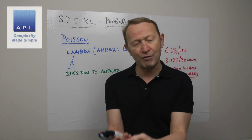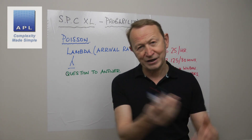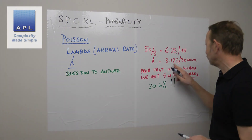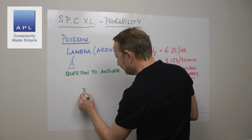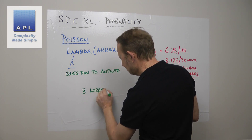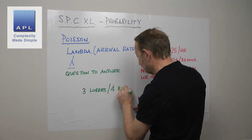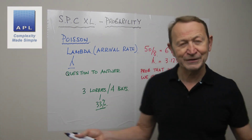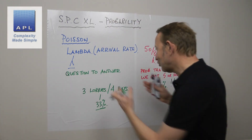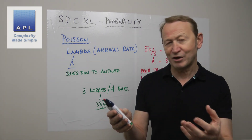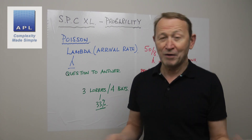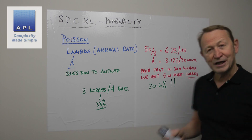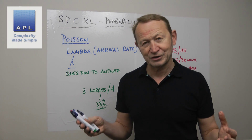This is the difference between observation and the dynamic nature of probability. Probability is not a static observation. By observation, we have on average 3 lorries arriving and four loading bays — that looks like 33% more bays than we need. But that's not the question you need to answer. The question is: how often will my bays get overwhelmed? That's what we're asking — what's the probability of five or more lorries arriving in a 30-minute window? It's 20.6%, which is far too high for a fast-moving warehouse.